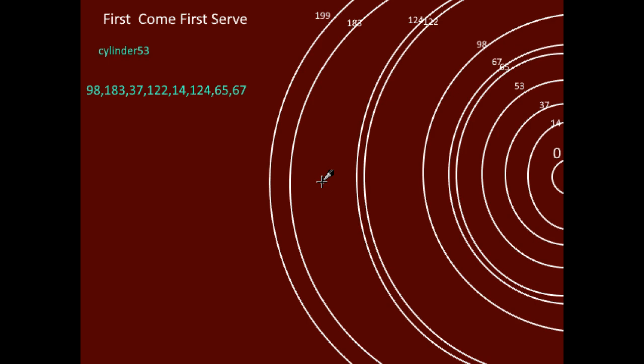This is our first-come-first-serve disk scheduling algorithm. Here the requests are serviced in the order they arrive in the disk queue.